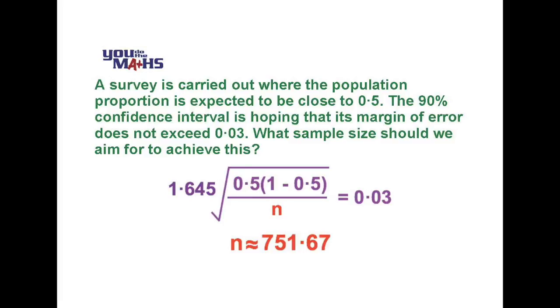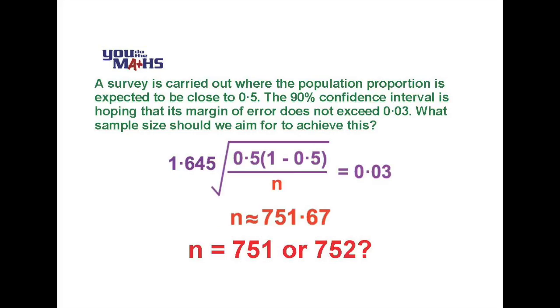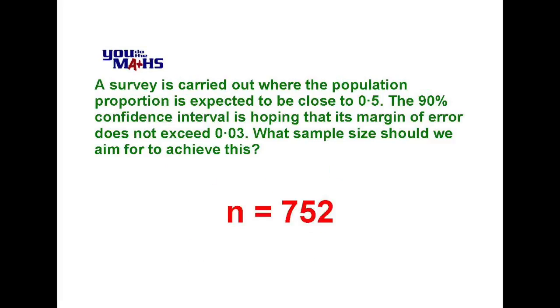Given that n is representing sample size we want that to be a whole number. So the question is, is n equal to 751 or 752 or does it even matter? The best way to solve this problem is to substitute the two n values into our equation. 752 is larger of course than 751 and if we substitute a larger number into the fraction the result will be smaller. It's important to note that we want our error margin to not exceed 0.03. We want it to be smaller. So the correct solution is for n equaling 752. We need the larger number if the margin is not to exceed 0.03. So the sample size we need to justify a margin of error smaller than 0.03 is 752.